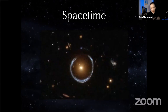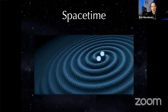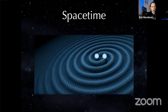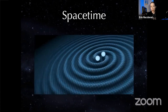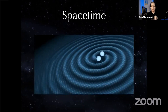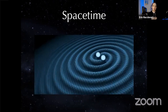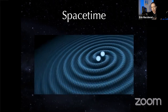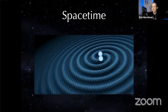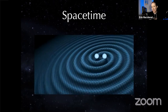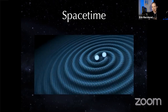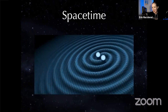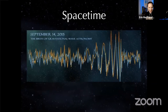Most famously, when objects rotate around each other they send ripples through space-time — gravitational waves — theorized by Einstein in 1915 and then detected in 2015 by the LIGO collaboration. I did my PhD research with LIGO, but I left in 2014, so don't ask me questions about that.